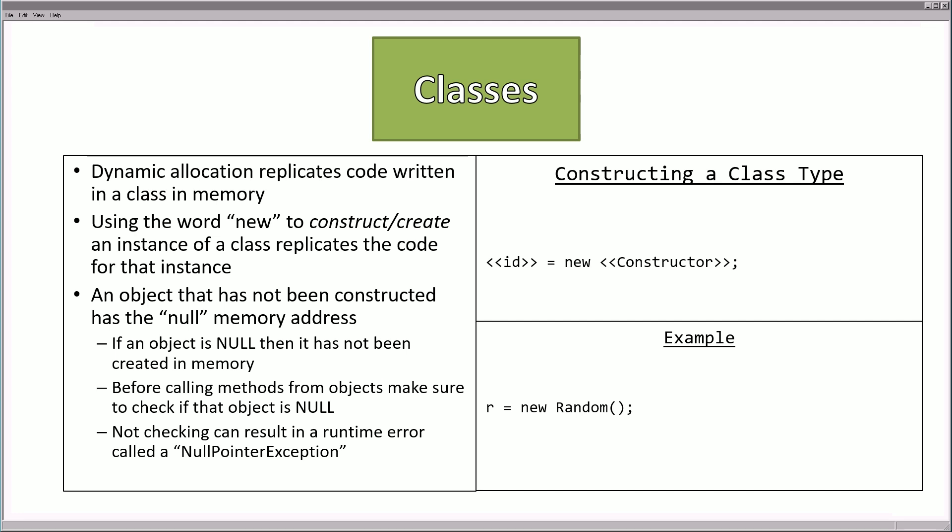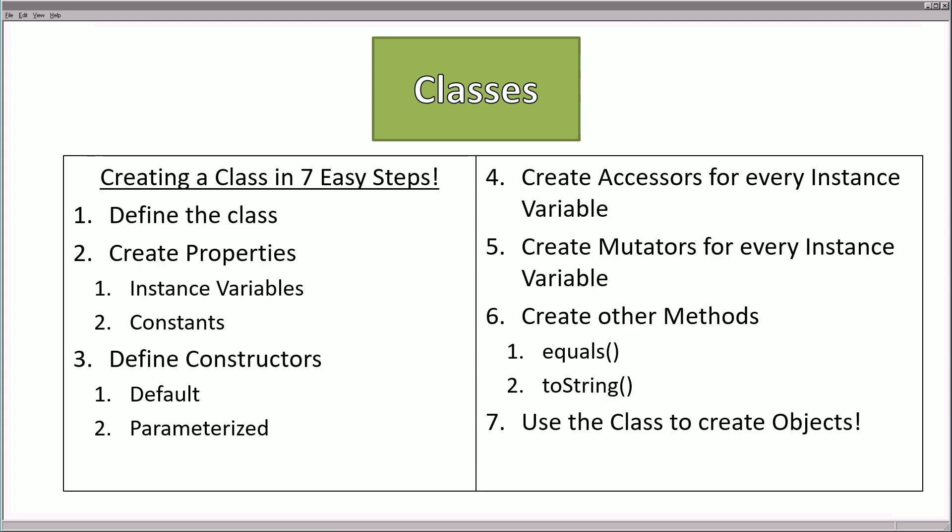We have used class types in the past, but now we need to start creating our own. Here's how you can create a class in seven easy steps: First, define the class. Second, create its properties — instance variables and constants. Third, define the constructors — usually a default and a parameterized constructor. Fourth, create accessors for every instance variable. Fifth, create mutators for every instance variable. Sixth, create the other methods like equals and toString. And seventh, use the class to create instances that we call objects.